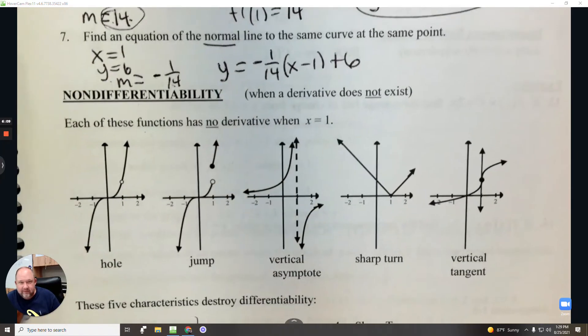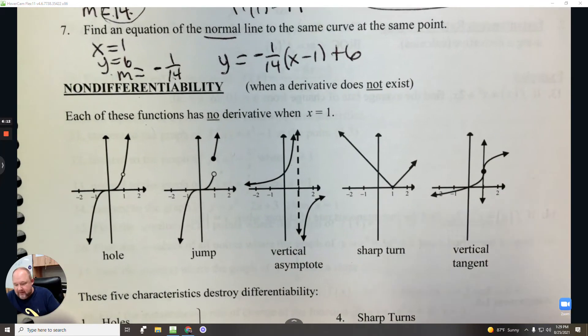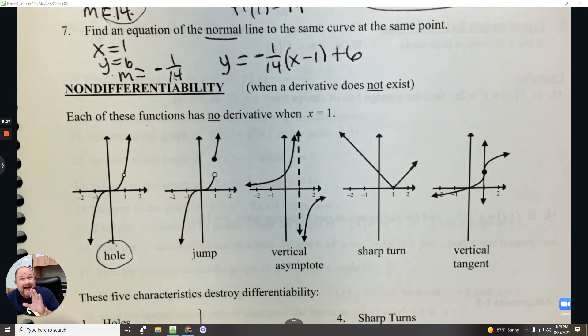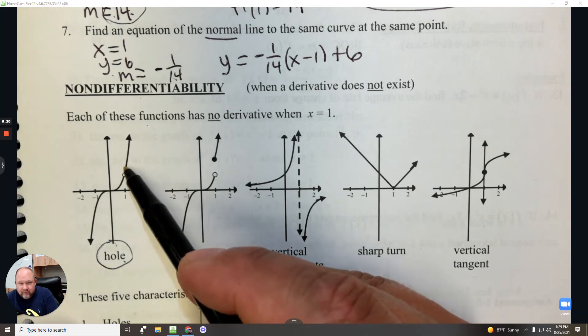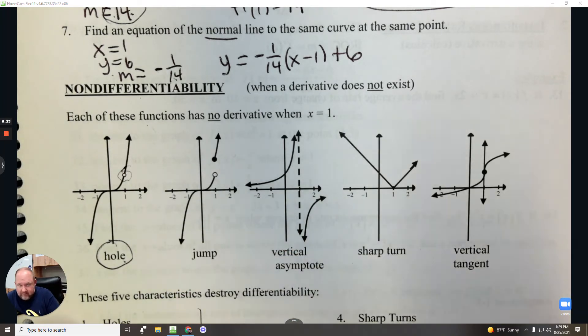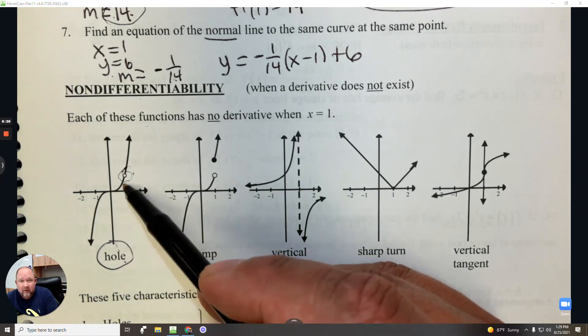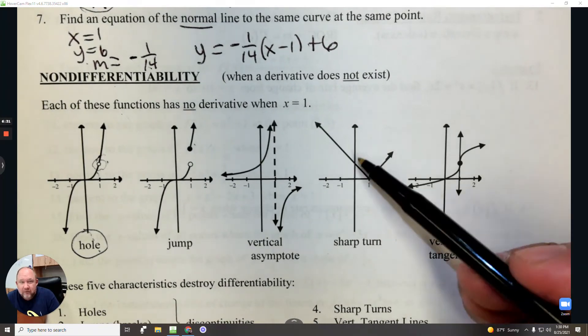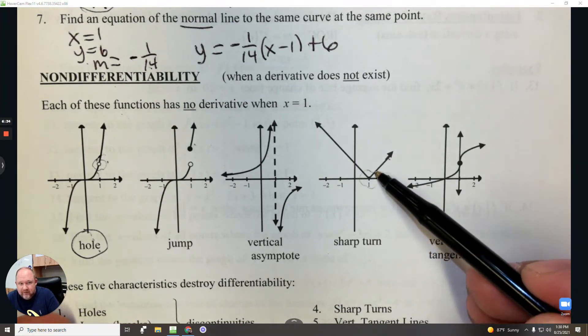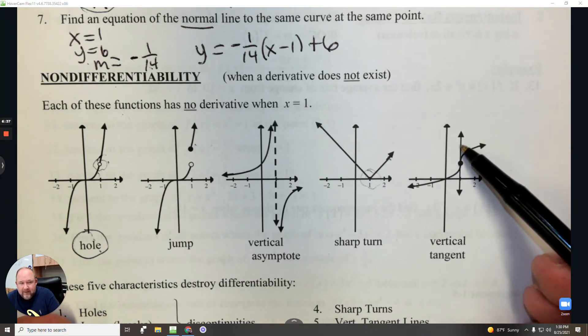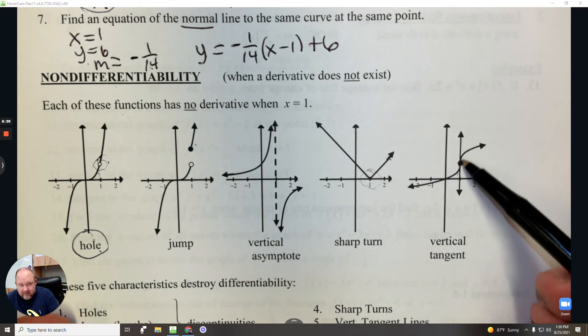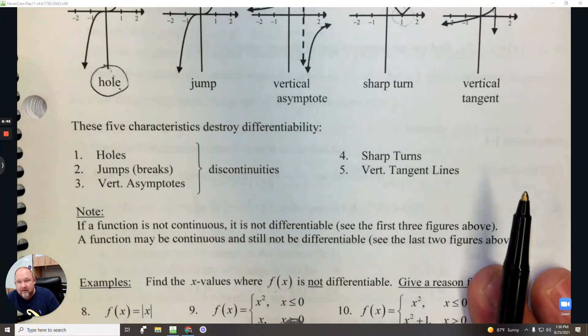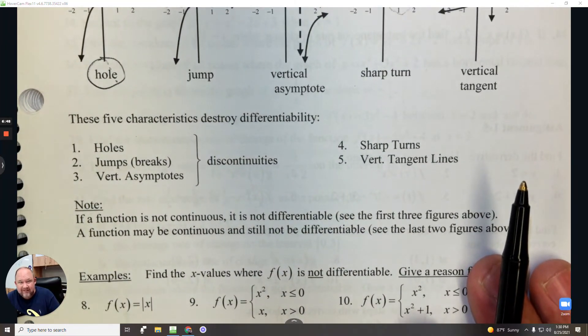Alright, non-differentiability. Where does the derivative not exist? The derivative does not exist at a discontinuity. A limit exists there, but not the derivative. So if it's not continuous there, the derivative does not exist. So a derivative doesn't exist at a hole or a jump or an asymptote. But also, if it's continuous, a derivative doesn't exist at a sharp turn or if it's a vertical tangent because the derivative of a vertical line is undefined.